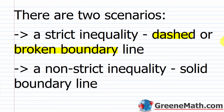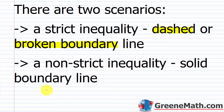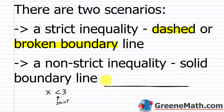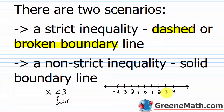Recall when we talked about a linear inequality in one variable. If I saw x is less than 3, that's strict. When we graphed this on the number line, we put a parenthesis at 3 facing to the left — or an open circle — and shaded everything to the left. When we use a dashed or broken boundary line, it's like that parenthesis: we're saying it's not included as part of the solution.